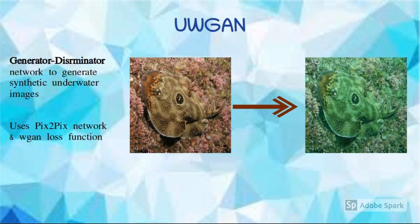In the training phase, we have used the EUVP dataset for training both the generator and the discriminator. For testing, a set of test images are given as input. As you can see, on testing, the in-air images are converted to synthetic underwater images. For evaluating the quality of generated images, a UIQM measure is used.